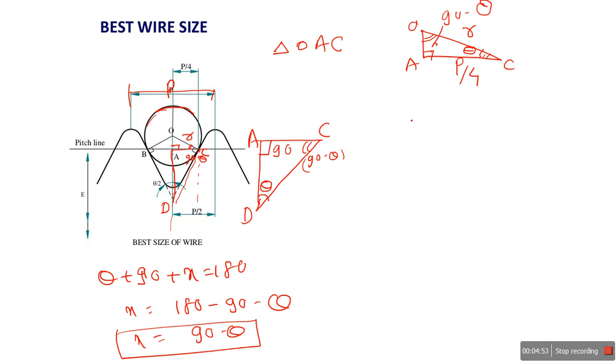For triangle OAC, we need these angles, the angles C and O, and then we can easily find out. Using trigonometry in the triangle, we set up the relationship to find R.